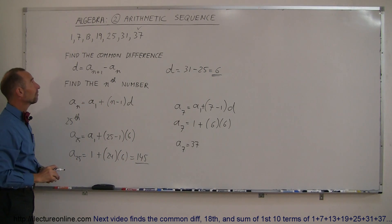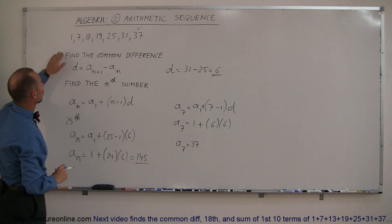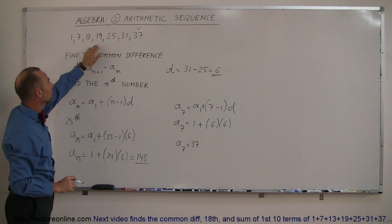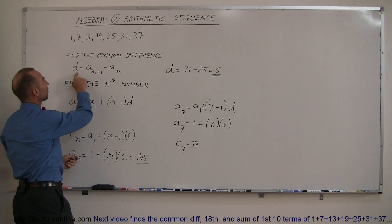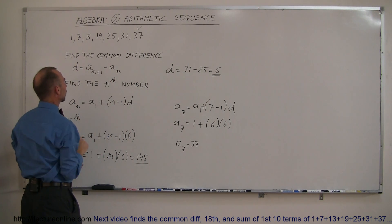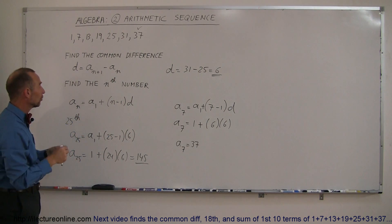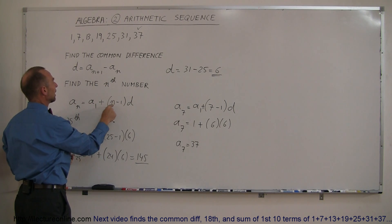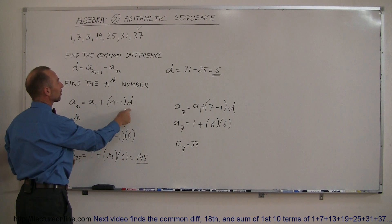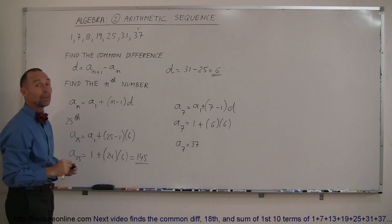So, again, whenever you have an arithmetic sequence, just a listing of numbers where the common difference is the difference between any two adjacent numbers, you can find the common difference by taking any number and subtracting the previous one. And if you want to find the nth number in a sequence, simply take the first one, add it to n minus 1 times the common difference. And some good examples on how to do that.